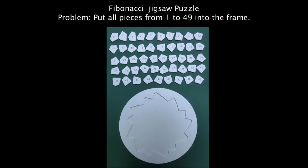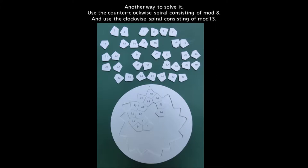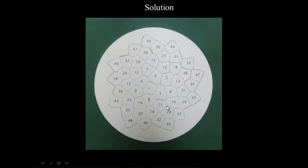The first topic is the Fibonacci jigsaw puzzle. The problem is to put all pieces from 1 to 49 into the frame. The normal way uses a golden angle — this angle is 137.5 degrees. Another way to solve it uses a counterclockwise spiral consisting of mode 8, a Fibonacci number, and a clockwise spiral consisting of mode 13, also a Fibonacci number. Anyway, it's a solution — just fit from 1 to 49.